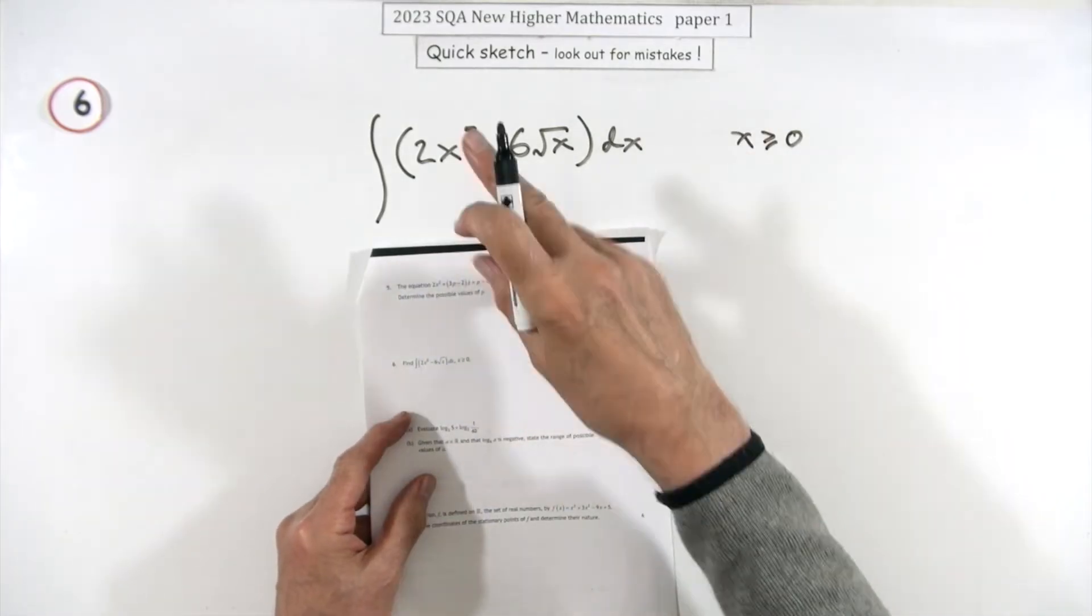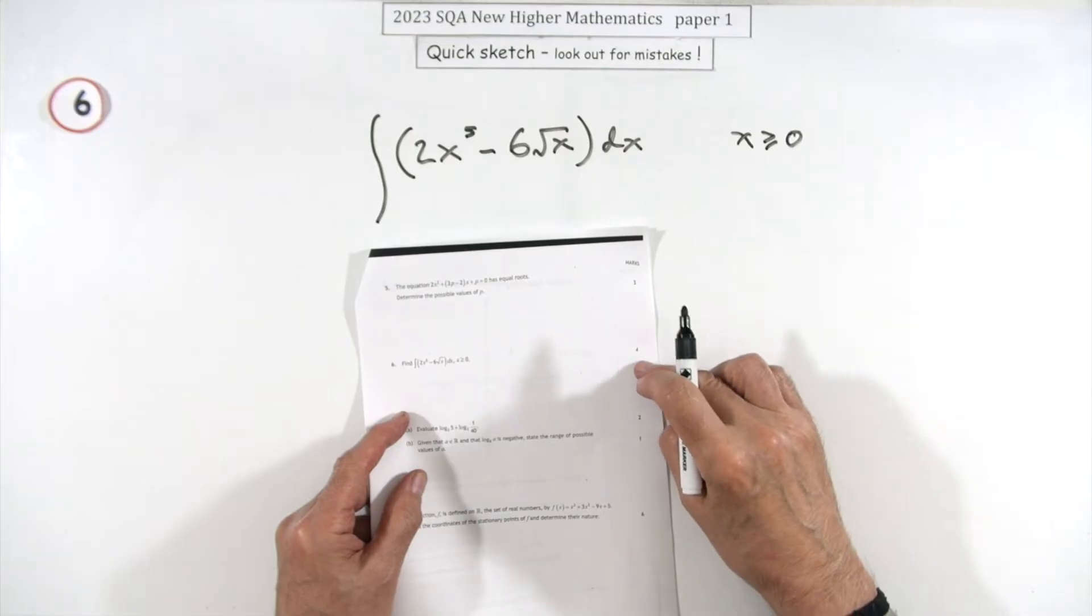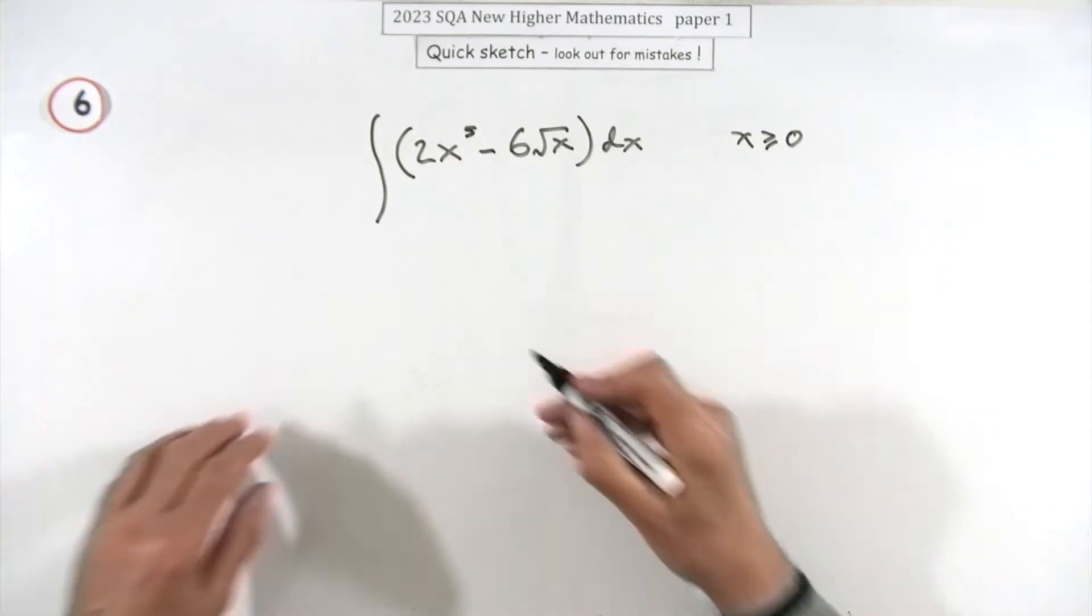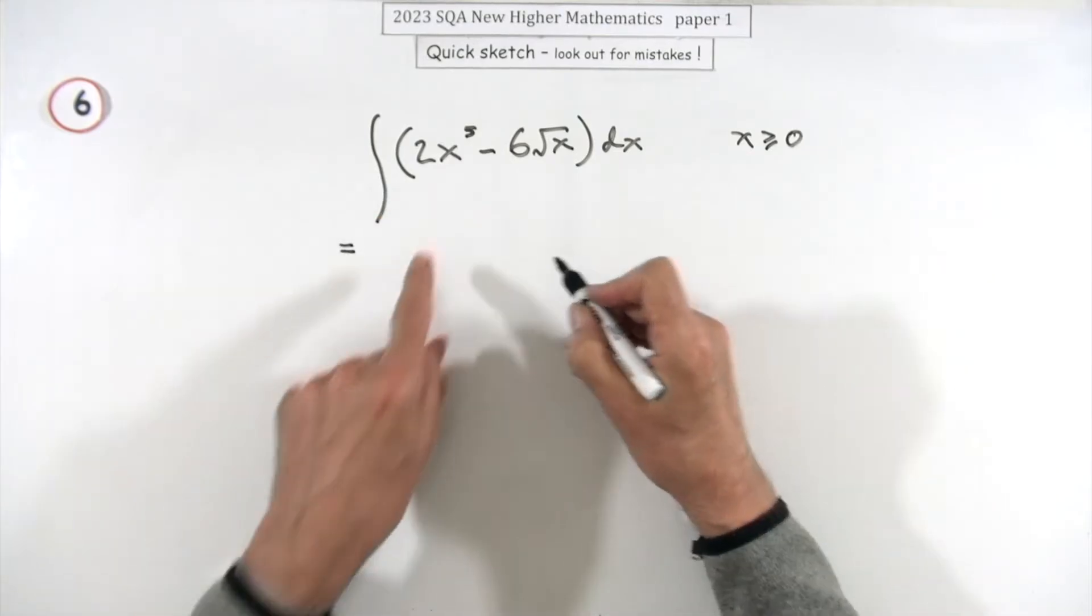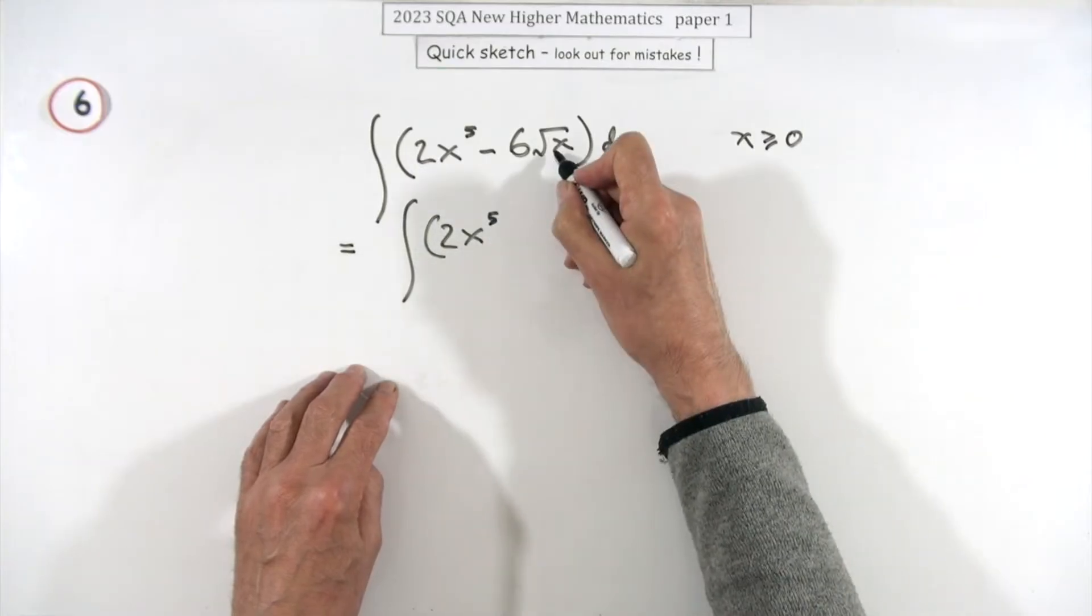So number six then from paper one of the 2023 higher maths, four mark question for carrying out that integration. That seems a little bit generous, although I suppose you might want to rewrite it, although you could do that in your head.